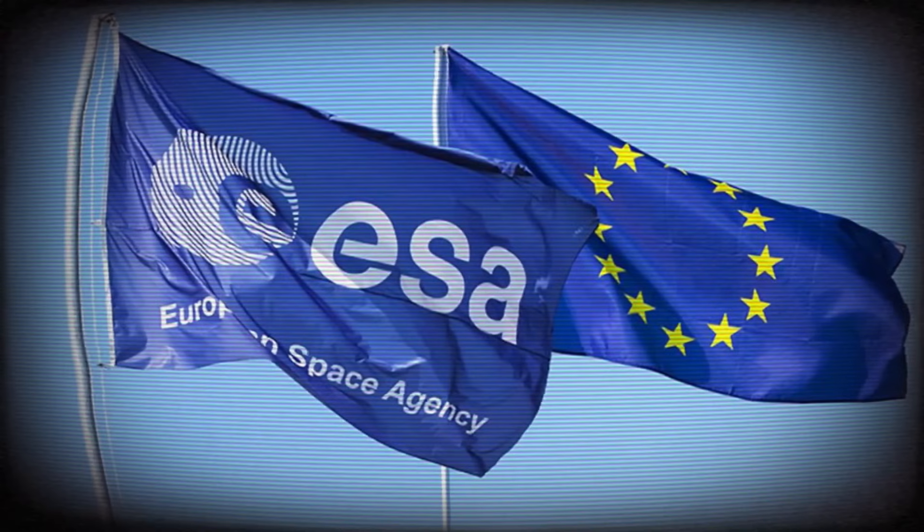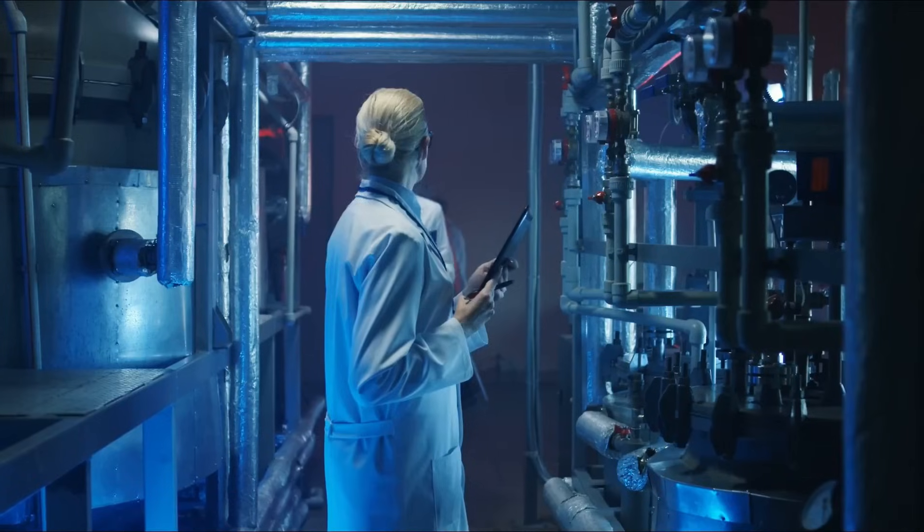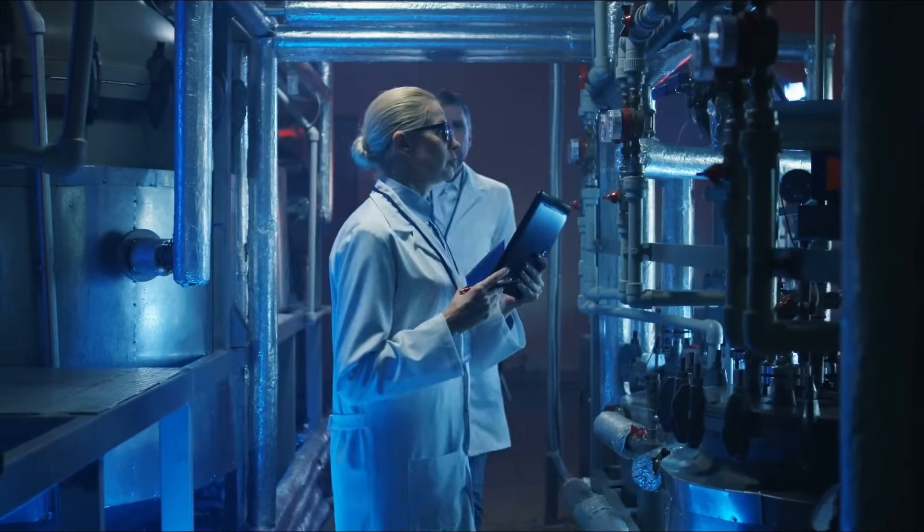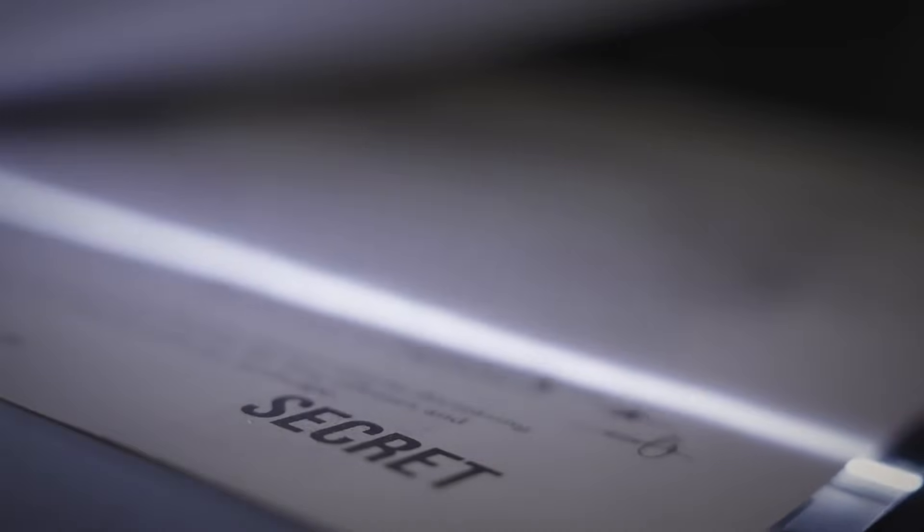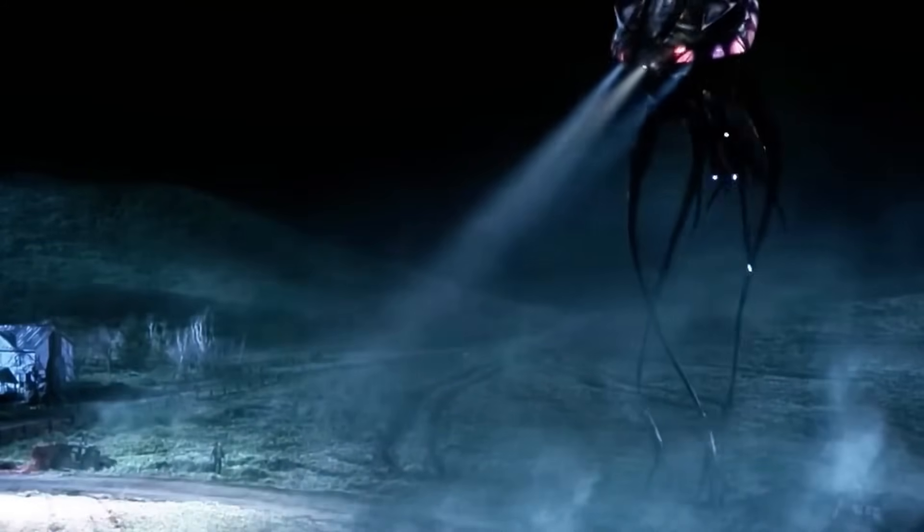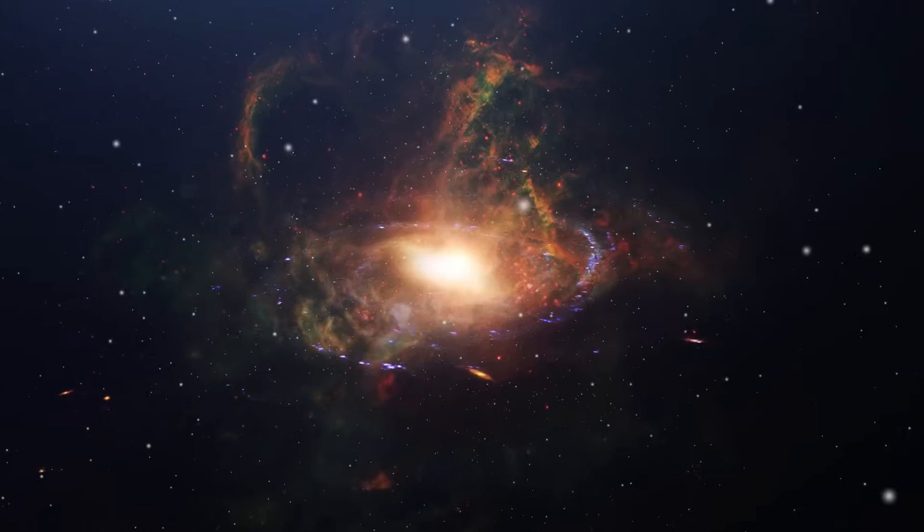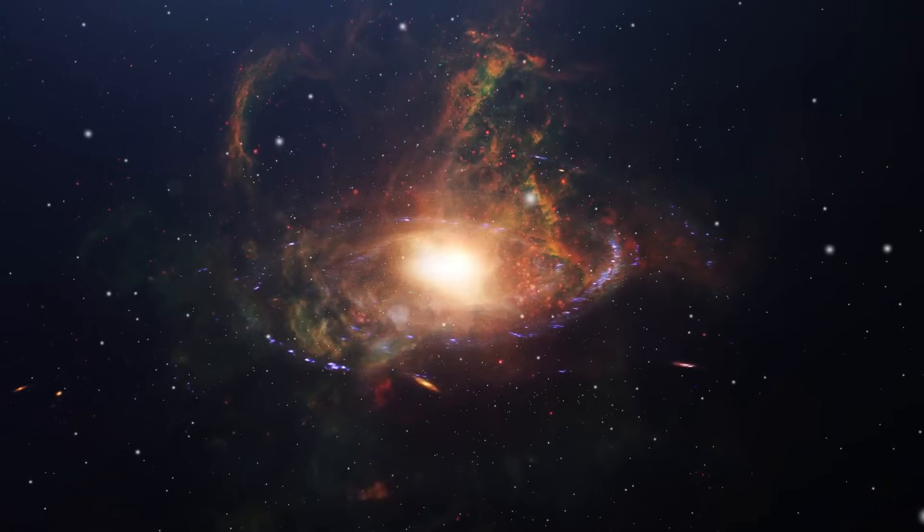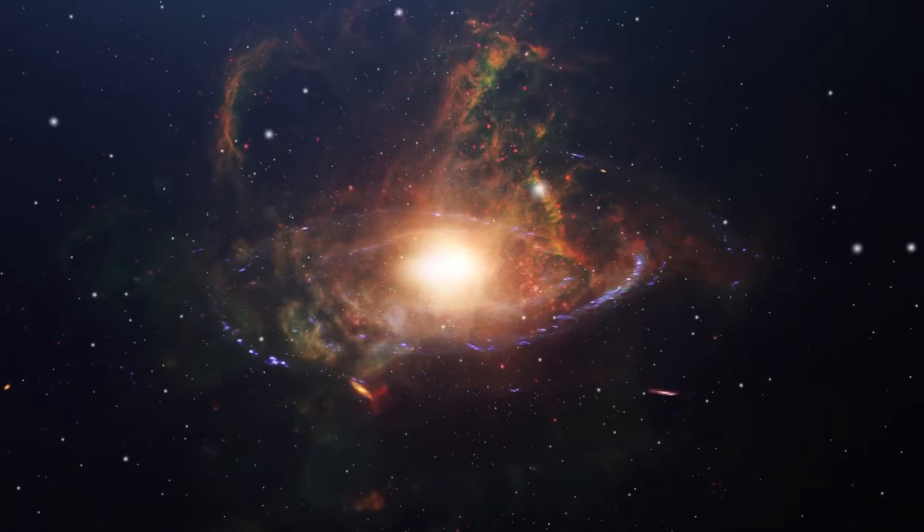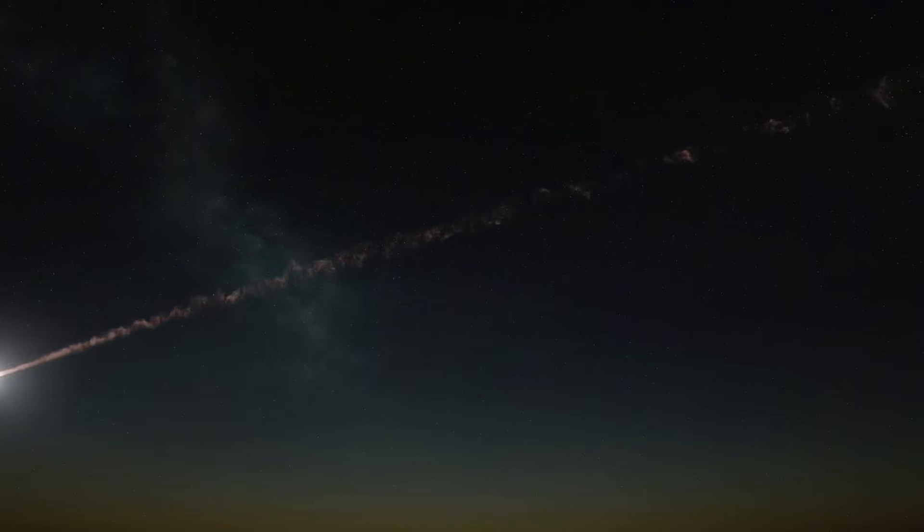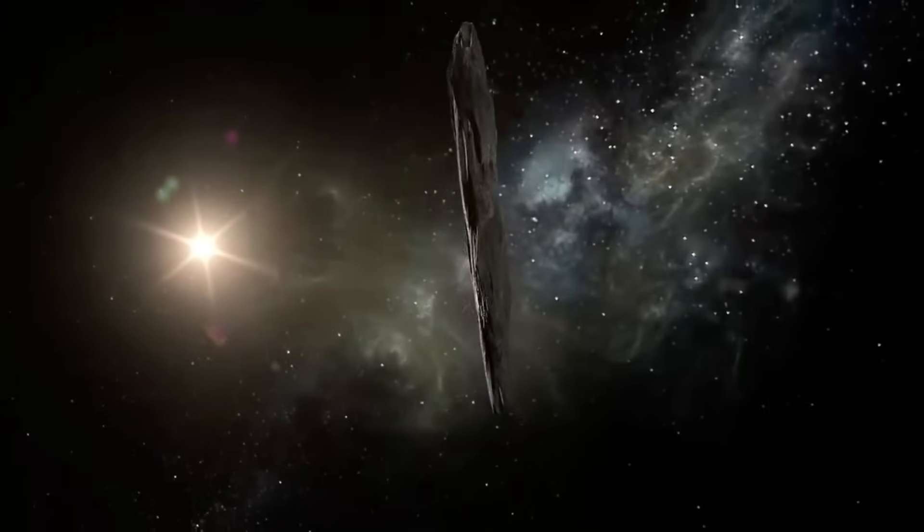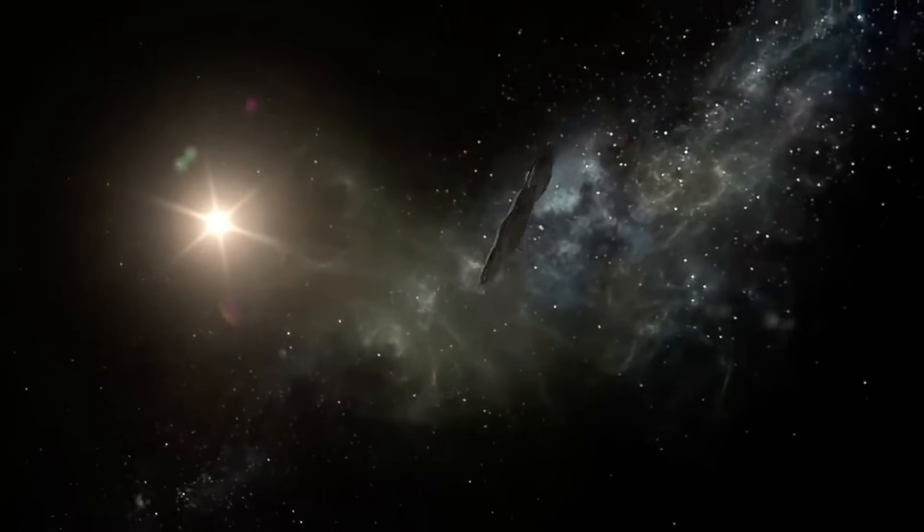Some worry Jupiter will capture 3i Atlas, pull into orbit, make permanent solar system resident. Probability? Extremely low. Distance at closest approach too large. Velocity too high. Escape trajectory maintained. Object continues through. Jupiter encounter merely modifies path, bends trajectory, doesn't capture, doesn't consume, just redirects slightly.